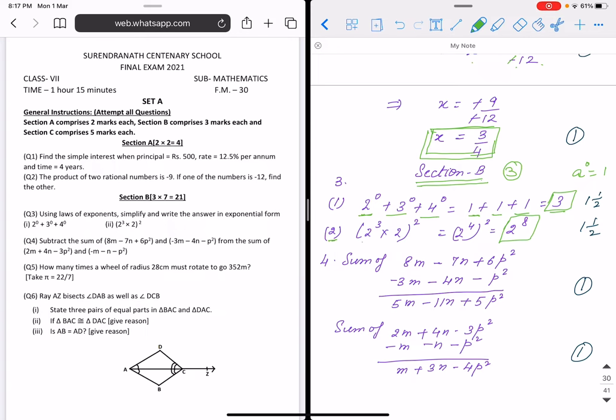Second question: 2 cube into 2, bracket and square. Base is same, so we add the power. 3 plus 1, that is 2 to the power 4. And we know if 2 powers are there, a to the power m to the power n, we multiply the power. So 4 into 2 will be 8. 2 to the power 8 will be answer.